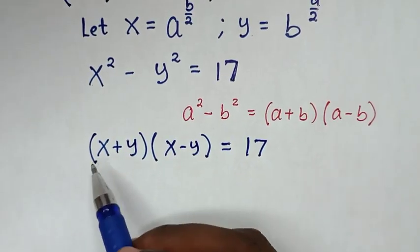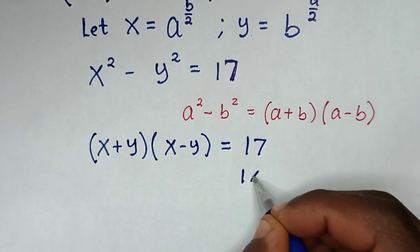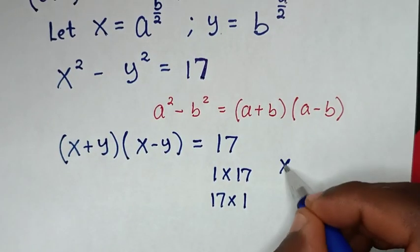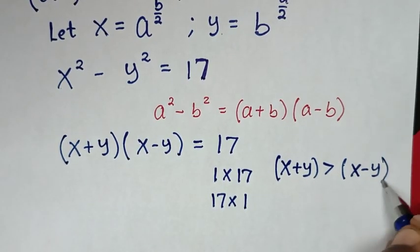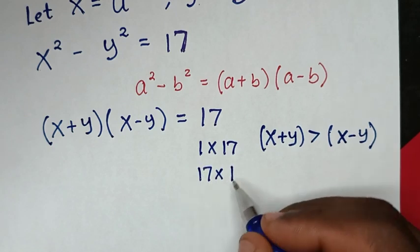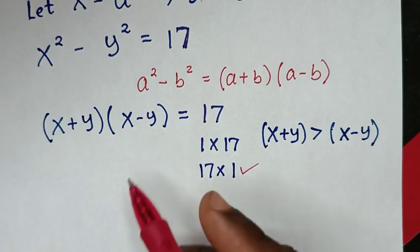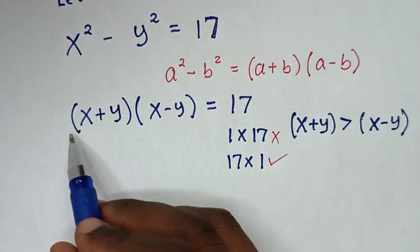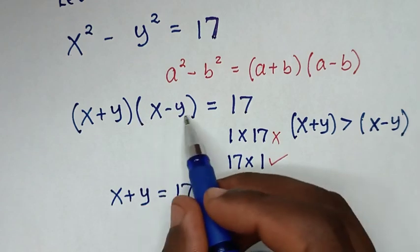The multiplication of x plus y times x minus y gives 17. Now 17 can be written as 1 times 17 or 17 times 1. Since x plus y is greater than x minus y, the matching factorization is x plus y equals 17 and x minus y equals 1. The case of 1 times 17 is not possible, so we only use this comparison.